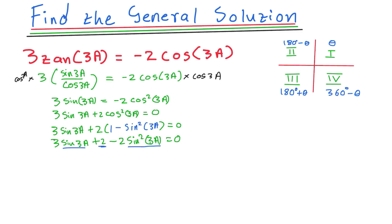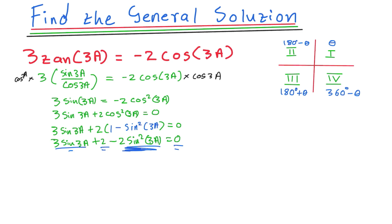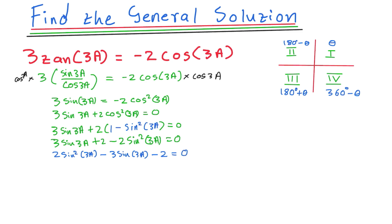To write it in descending order like a proper quadratic, I divide all terms by -1 so the squared term becomes positive. This gives me 2sin²(3a) - 3sin(3a) - 2 = 0. This is a quadratic equation I can factorize.